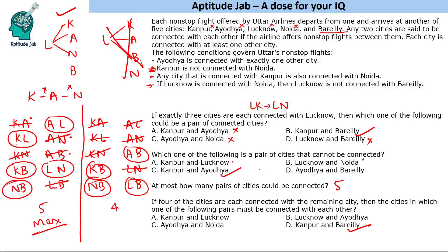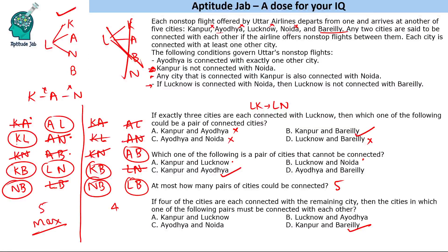This is how we solve this set, and those are the answers to the 4 questions. It is like team selection wherein certain conditions are given — if this is selected, then another is not selected, and vice versa. Likewise, you have to match these cities based on the constraints: if one city is connected, the other may not be connected.